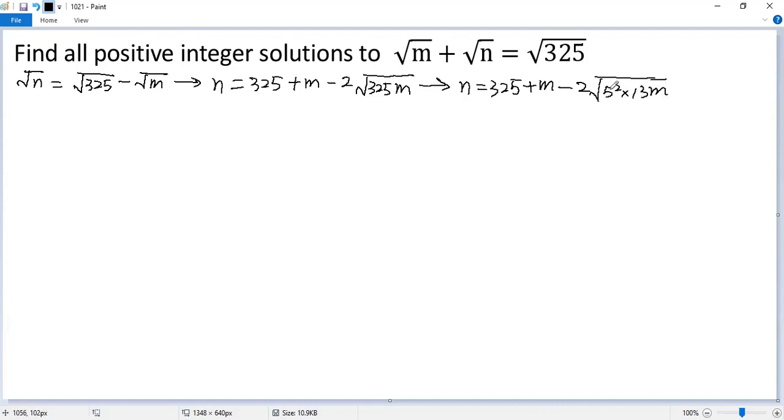We can extract 5 out. 2 times 5 equals 10. So we get n equals 325 plus m minus 10 times square root of 13 times m.